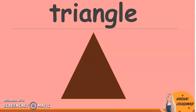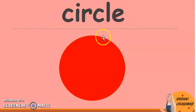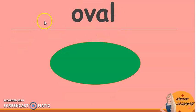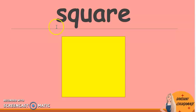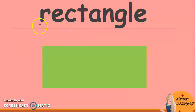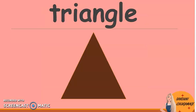Okay, now read after me again. Circle. Oval. Square. Rectangle. Triangle.